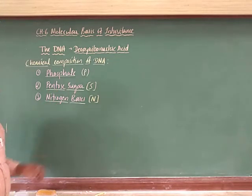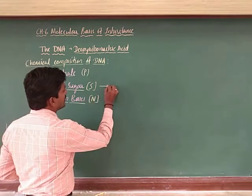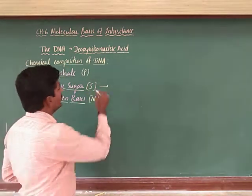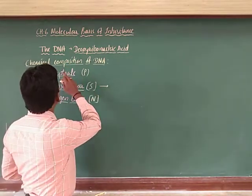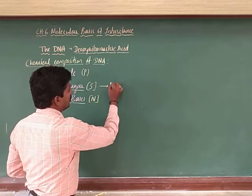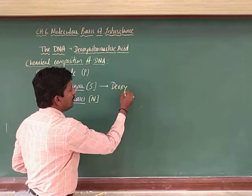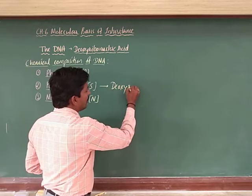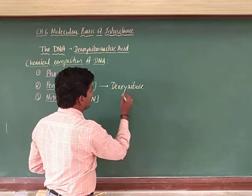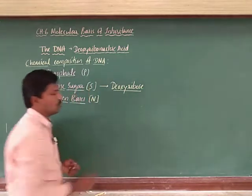Now, which pentose sugar is present here? The pentose sugar is deoxyribose. Deoxyribose is a pentose sugar which has five carbon atoms, and that is present in DNA.